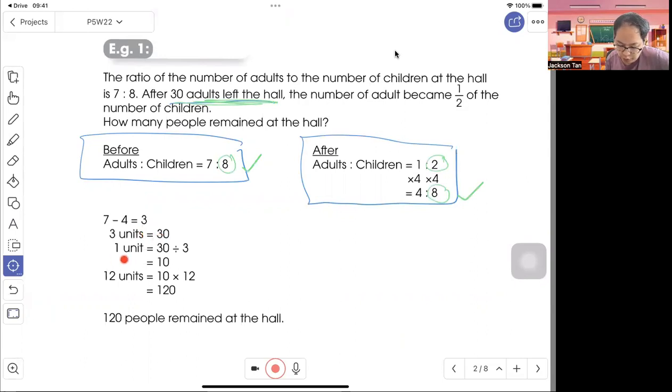7 minus 4 will be your 30 adults, 3 units. And 1 unit will be 10. They ask how many people remain at the hall. That will be 4 plus 8, 12 units. So 10 times 12, 120 people remain.